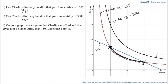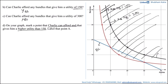Moving on to the next part: on your graph, mark a point that Charlie can afford and that gives him a higher utility than 150, and label that point as A. The question has two conditions: we want utility higher than 150, and we want all the points that Charlie can afford. The points that give Charlie a utility higher than 150 are the shaded region, excluding the indifference curve itself since that gives exactly 150.